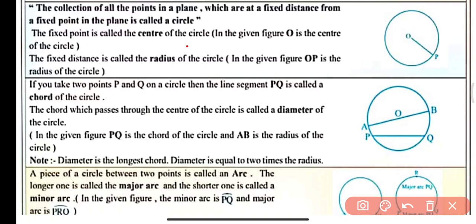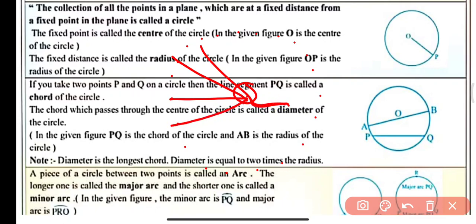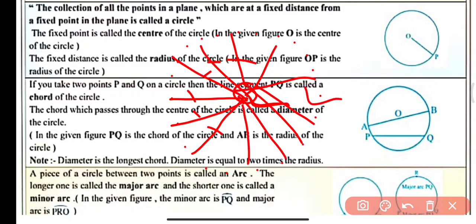In other words, a circle is the collection of infinite points that are at a fixed distance from a fixed point. This fixed distance is known as the radius of the circle, and this fixed point is known as the center of the circle. So the fixed point is called the center of the circle, and the fixed distance is called the radius of the circle. All these distances are equal.